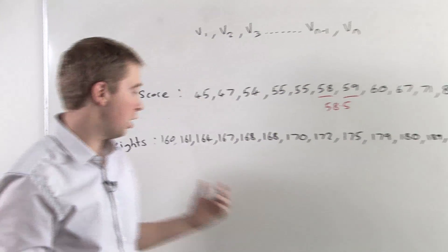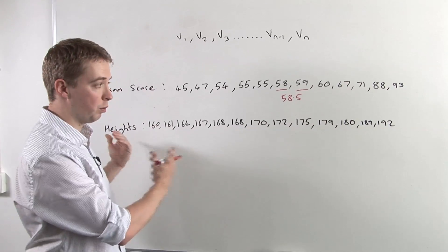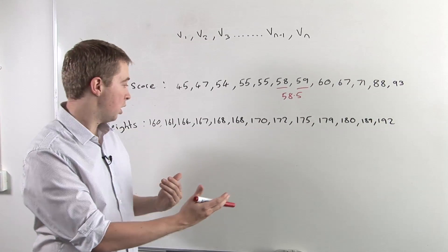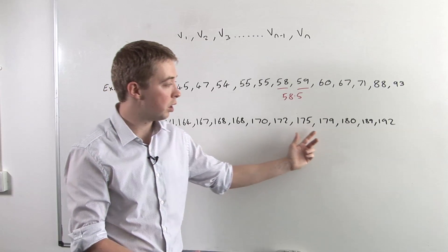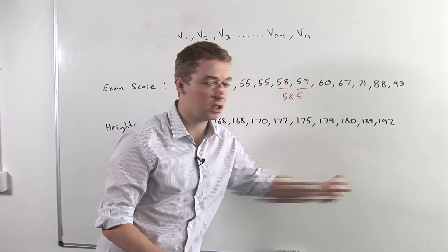What we have here are a selection of heights. Again, they've been ordered from lowest to highest. If we count these, we have 1, 2, 3, 4, 5, 6, 7, 8, 9, 10, 11, 12, 13 heights.